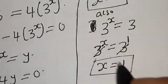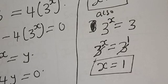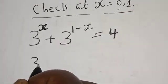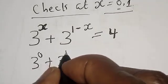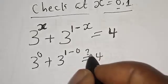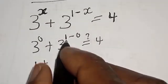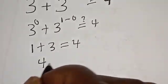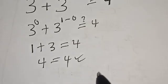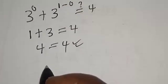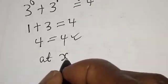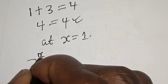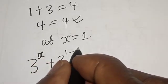Let's check to confirm if our answers are correct. At x equals 0: 3 raised to power 0 plus 3 raised to power 1 minus 0 must equal 4. Then 3 raised to power 0 is 1, plus 3 raised to power 1 is 3, must equal 4. Then 1 plus 3 equals 4 — the left hand side equals the right hand side. We satisfy the given equation at x equals 0. Now let's check at x equals 1.